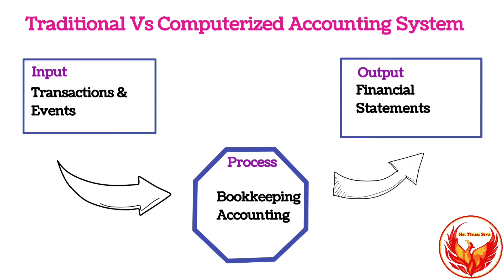On the processing stage, in manual accounting we do bookkeeping and accounting manually from physical documents, but in computer-based accounting, bookkeeping and accounting are processed using software packages. Finally, we get financial statements — in manual accounting in a traditional way, and in computerized accounting the financial statements are generated using software packages.